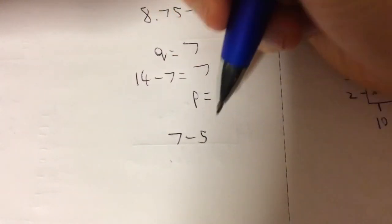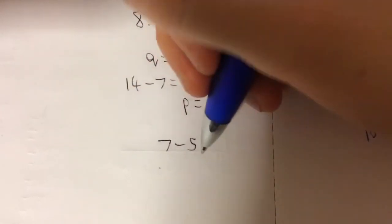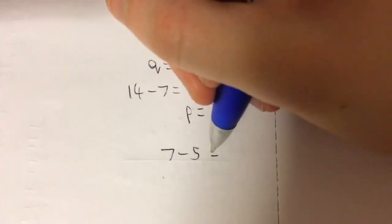And then if we take 7 minus 5, which is the tax, that's the amount suppliers will receive. So that's 2.